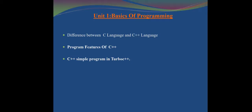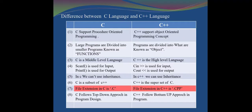These are the points we will learn today. The first point is the difference between C language and C++ language, then the program features of C++, and then a C++ program in Turbo C++. The first difference: C supports procedure-oriented programming and C++ is an object-oriented programming concept.